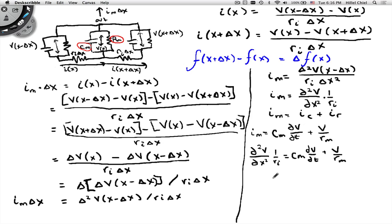Let's move that all over to one side. Partial squared v partial x squared times 1 over ri minus c_m partial v partial t minus v over r_m equals 0. Multiply everything by r_m and you get partial squared v partial x squared times r_m over ri minus r_m c_m partial v partial t minus v equals 0.